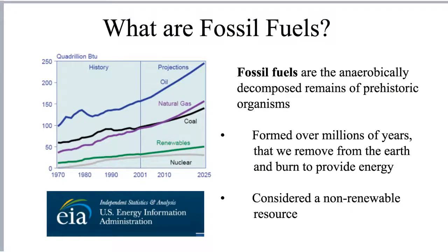Let's begin by addressing the question: what are fossil fuels? Fossil fuels are defined as the anaerobically decomposed remains of prehistoric organisms. Largely, they come from photosynthetic organisms like plants. The fossil fuels that we use for energy include things like oil, natural gas, as well as coal.